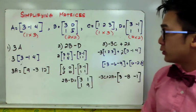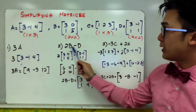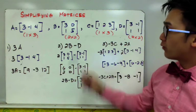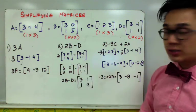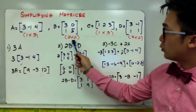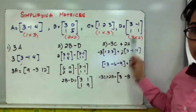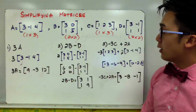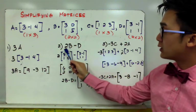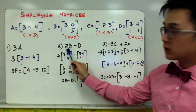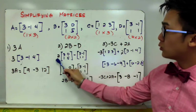Now for example number 2, we'll perform 2B minus D. So we first need to check if matrix B and matrix D have the same order. So B is a 2 by 2, and D is another 2 by 2, so it's possible to subtract the two matrices. So first you need to simplify the scalar multiplication by distributing 2 to matrix B,